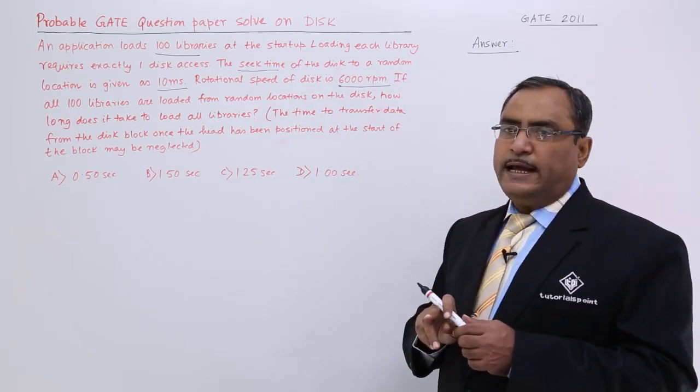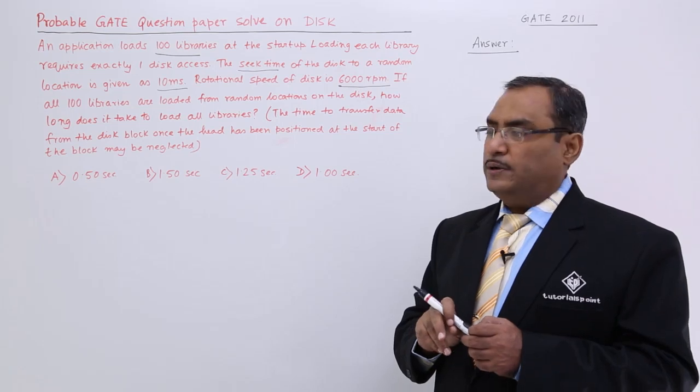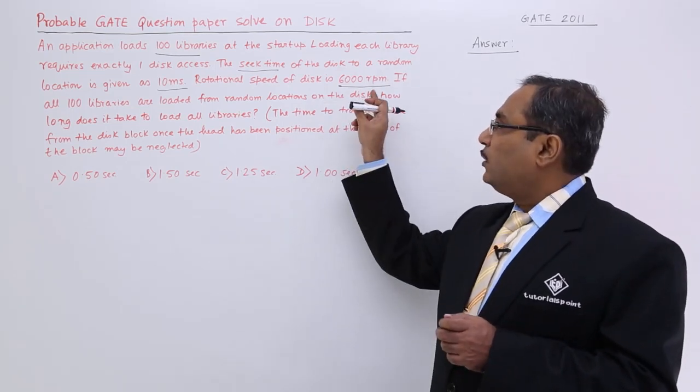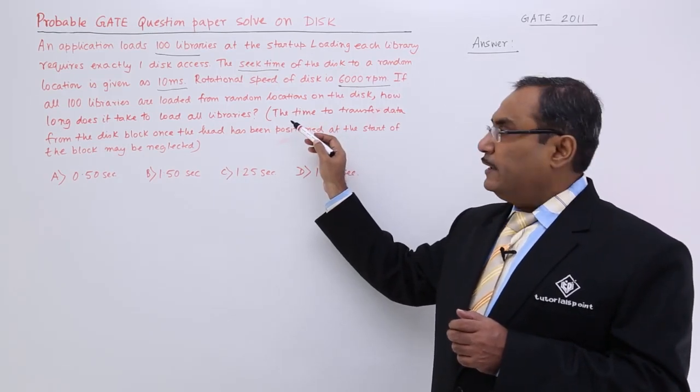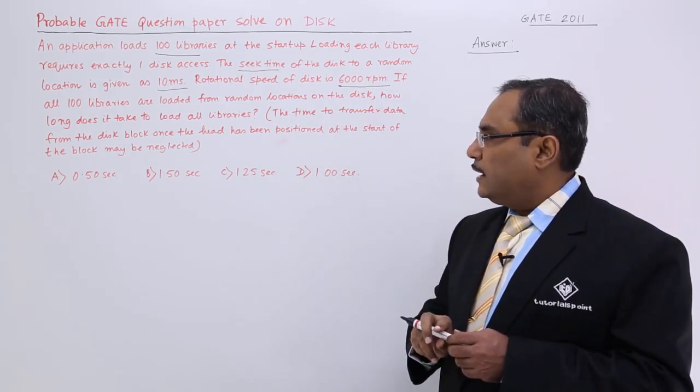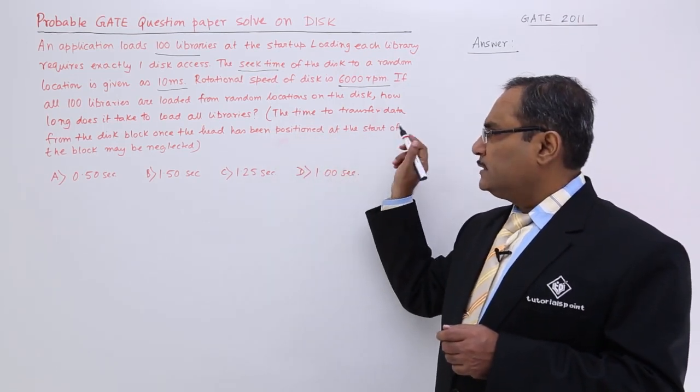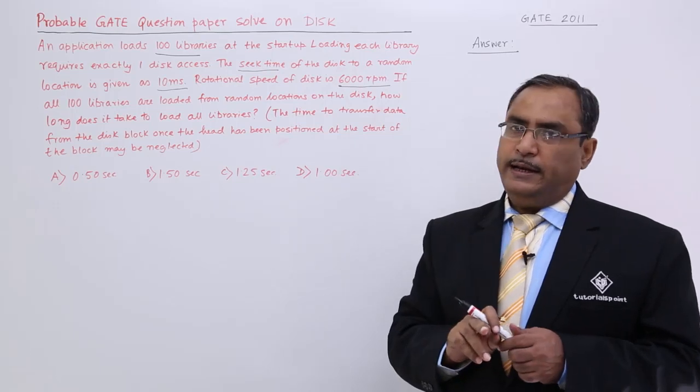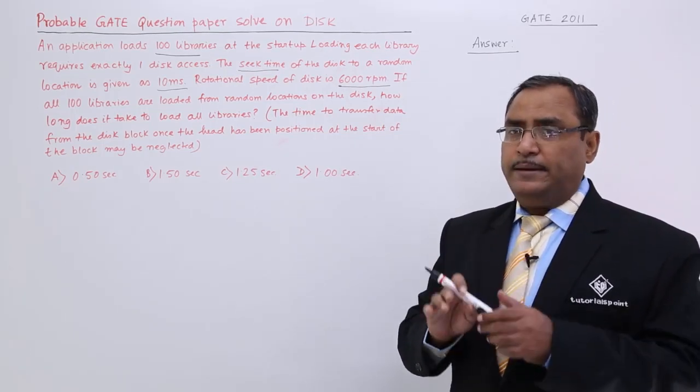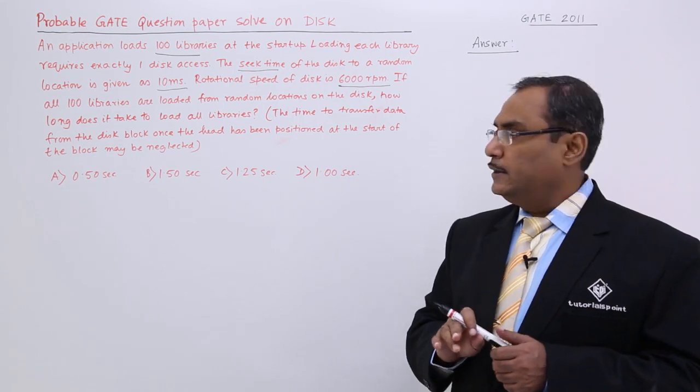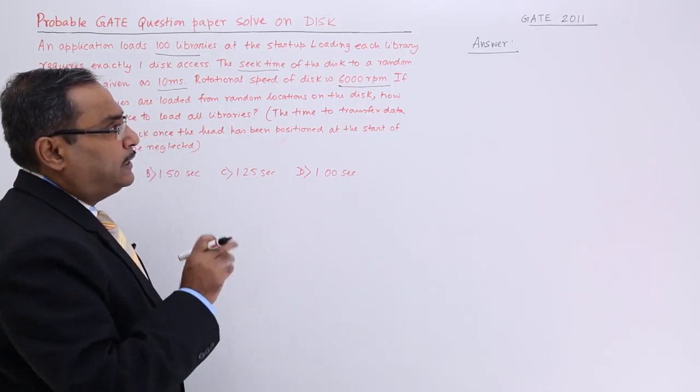Here you see the seek time is given, but the rotational latency has not been given. As a result of that, that has to be calculated from this rpm. And the consideration has been given the time to transfer data from the disk block once the head has been positioned at the start of the block may be neglected. That means they are telling that the transfer time can be neglected. Now, let me start with the solution.